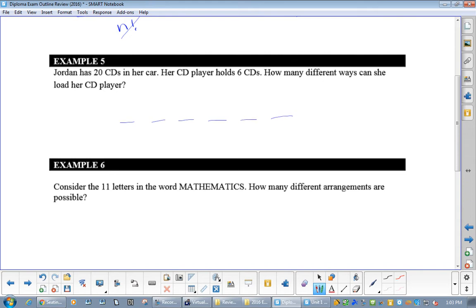Well, how many choices do I have for that first one? Twenty times nineteen, eighteen, seventeen, sixteen, fifteen. See, order does matter. Or you would go twenty pick six, right? There is twenty CDs, I will pick six.